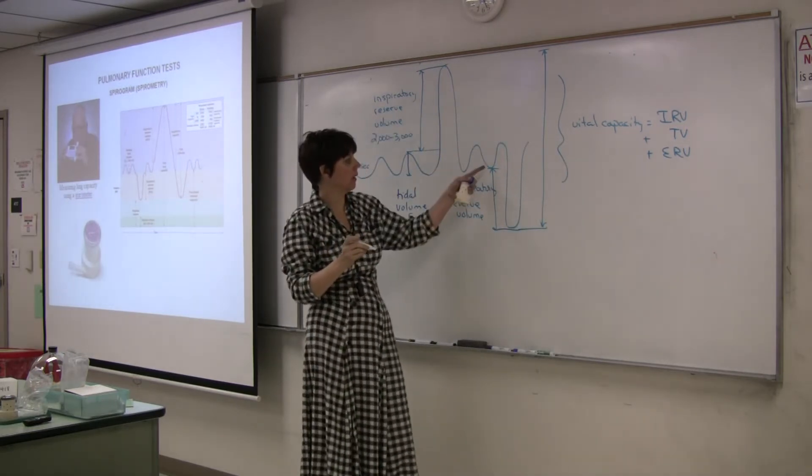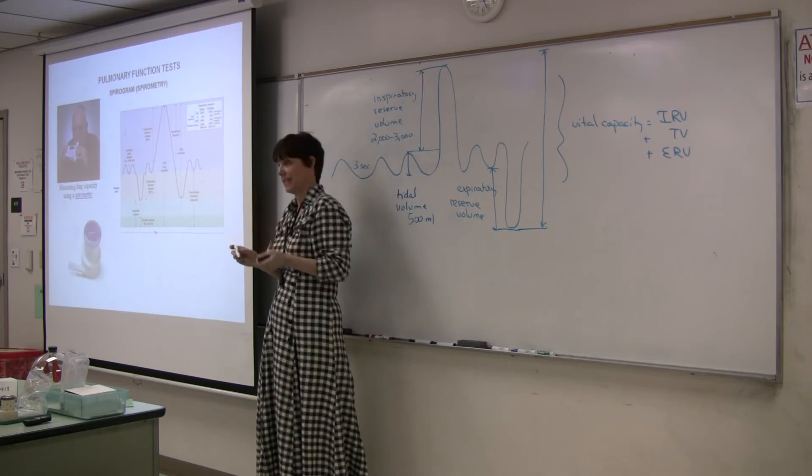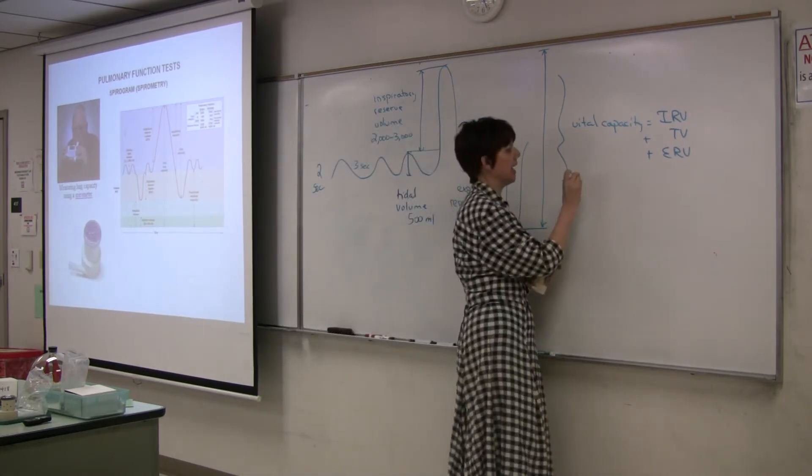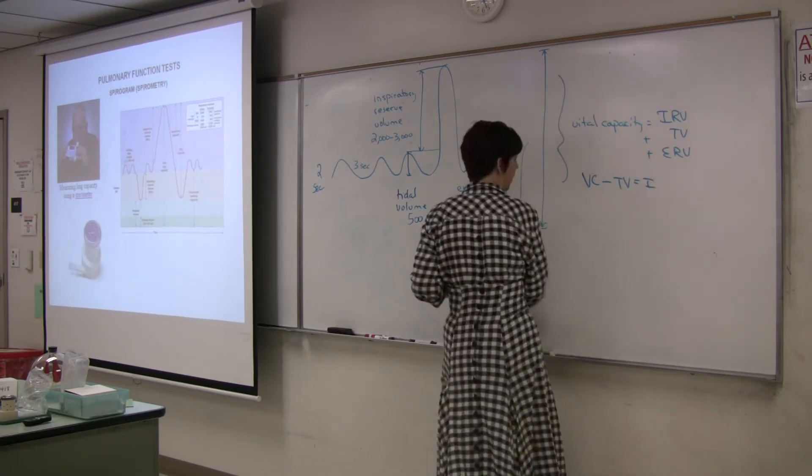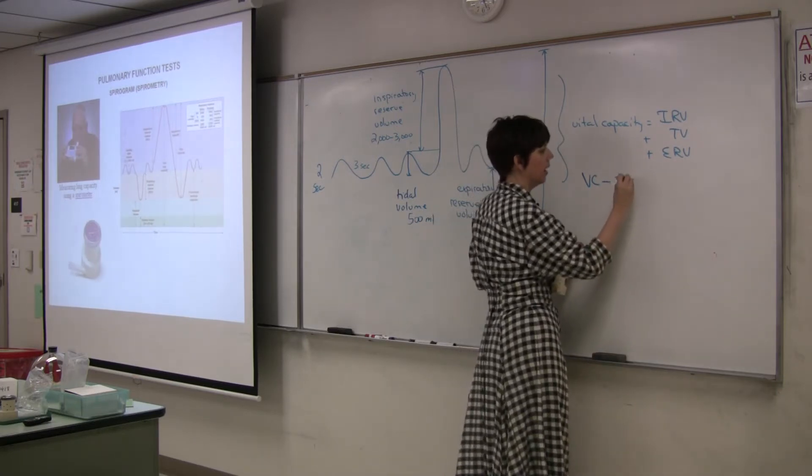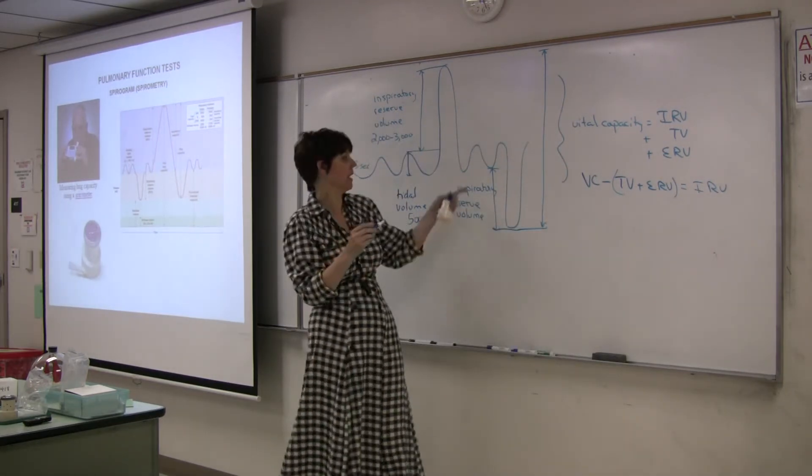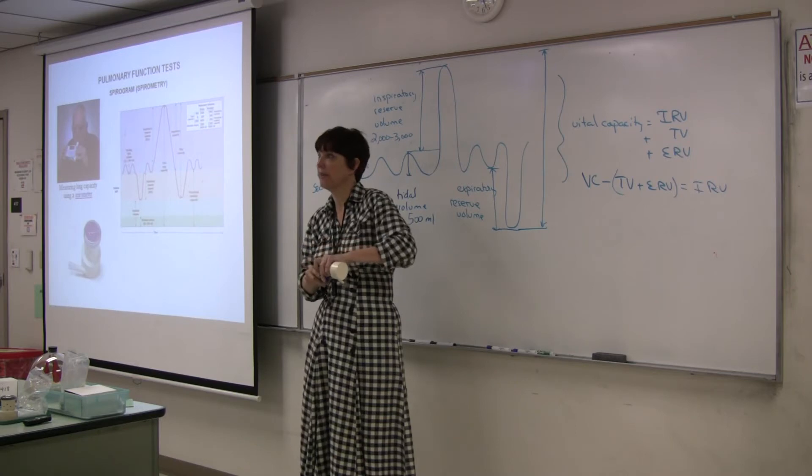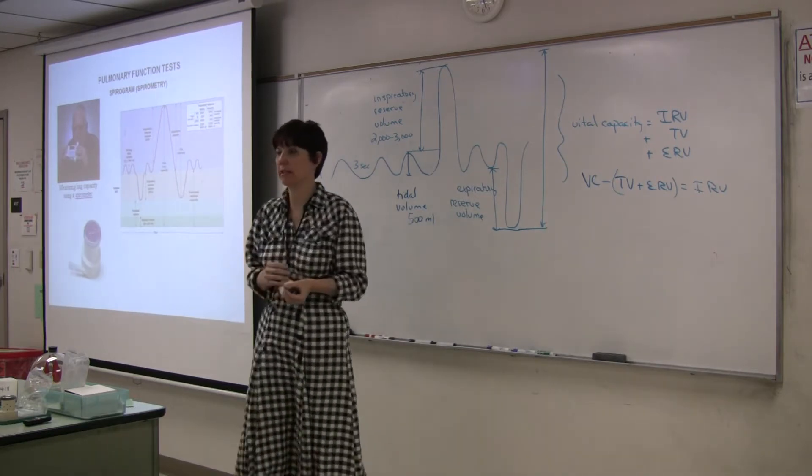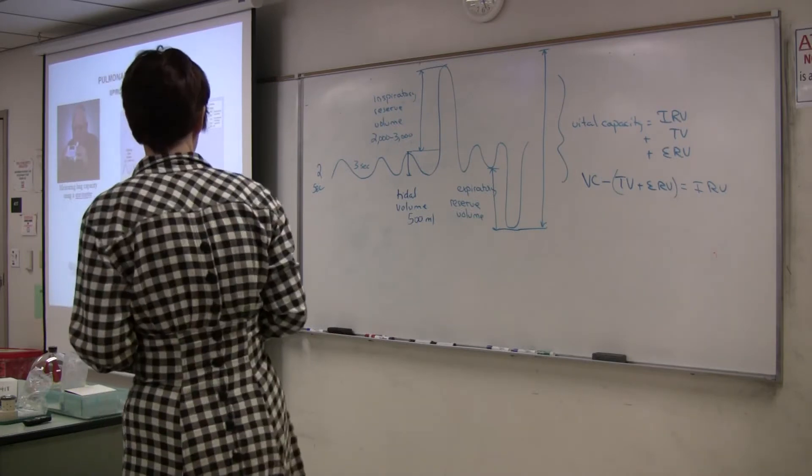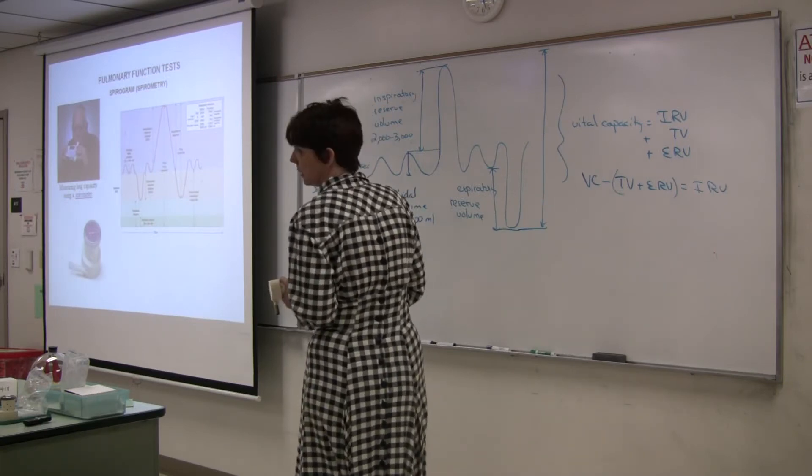And now we're going to force, this is where we breathe out passively. Now we're going to force as much air out as possible. So this is where we use active expiration. And this is called my expiratory reserve volume. If I combine all three of those, it's known as vital capacity. So vital capacity is the sum of inspiratory reserve volume plus tidal volume plus expiratory reserve volume.